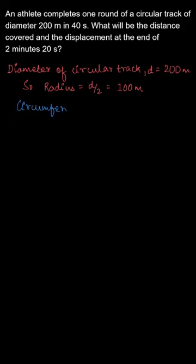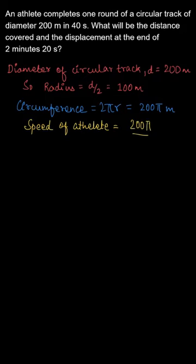So the circumference of the circle will be 2πr, that is 200π meters. Now the speed of the athlete will be 200π divided by 40, that is distance upon time, so it will be 200π by 40 meters per second.